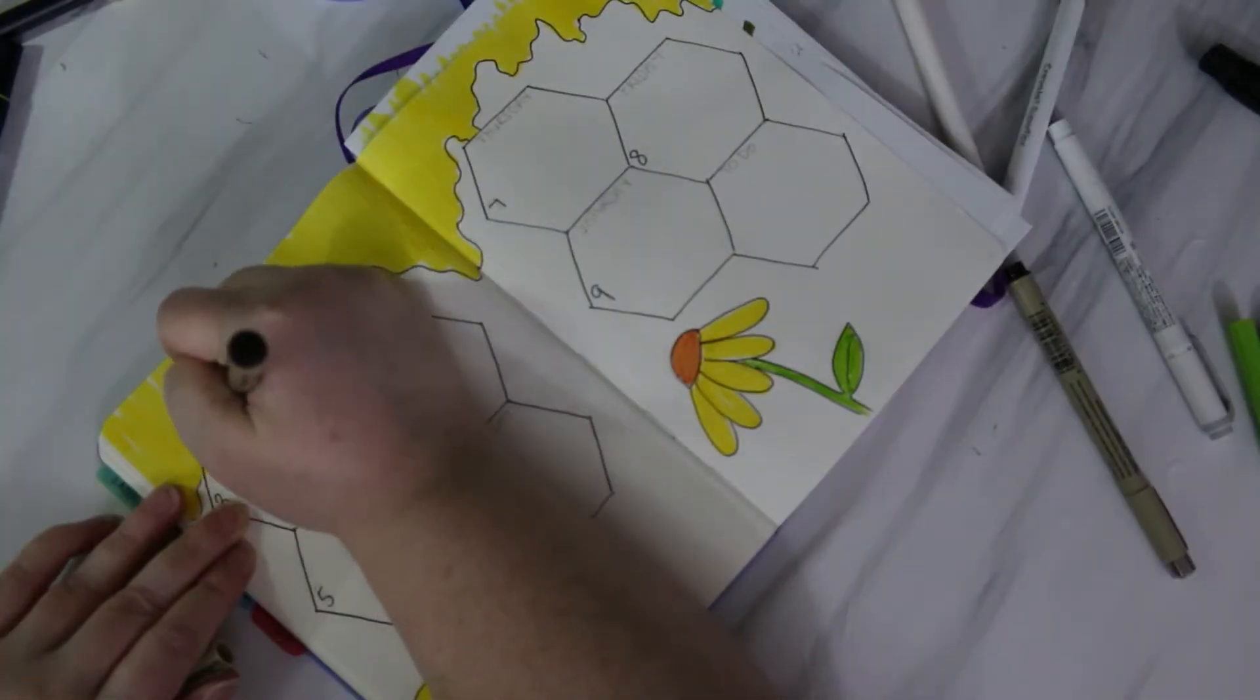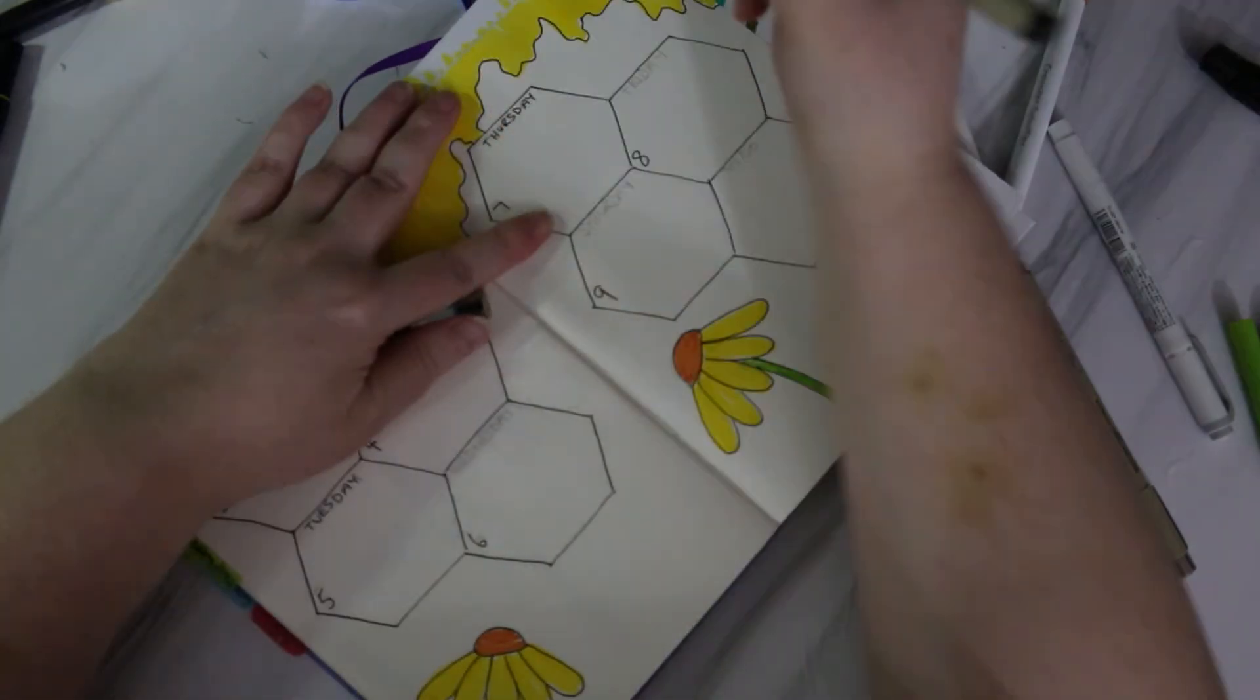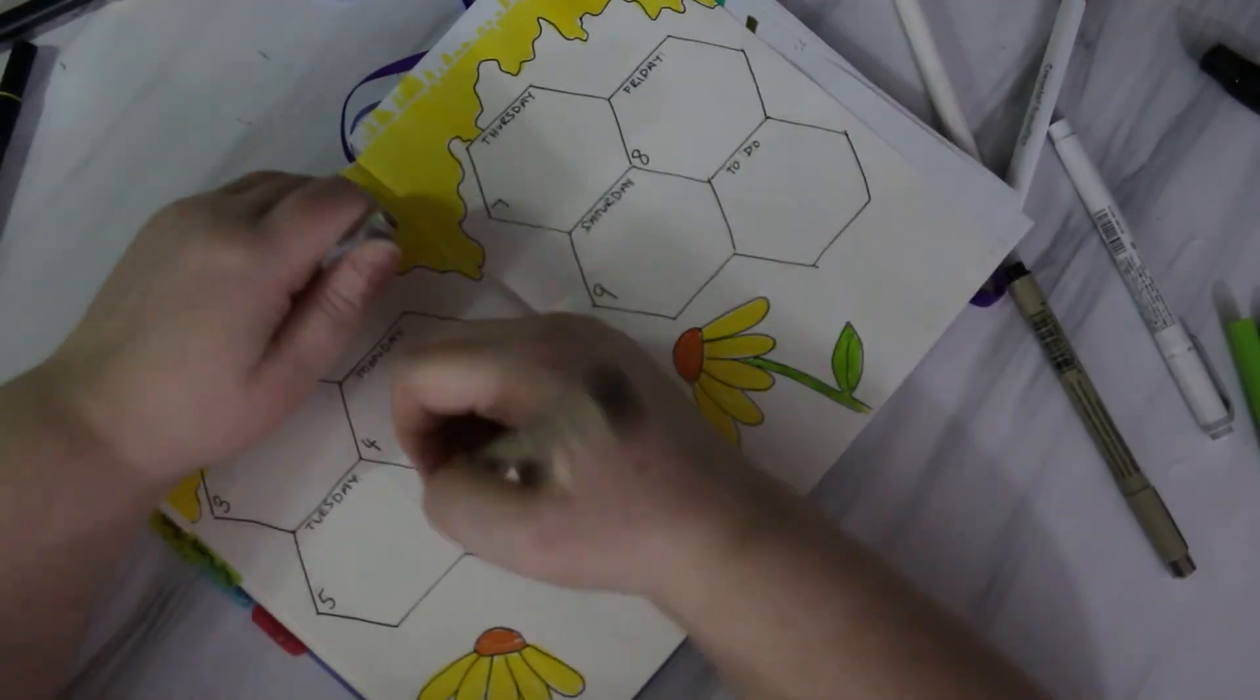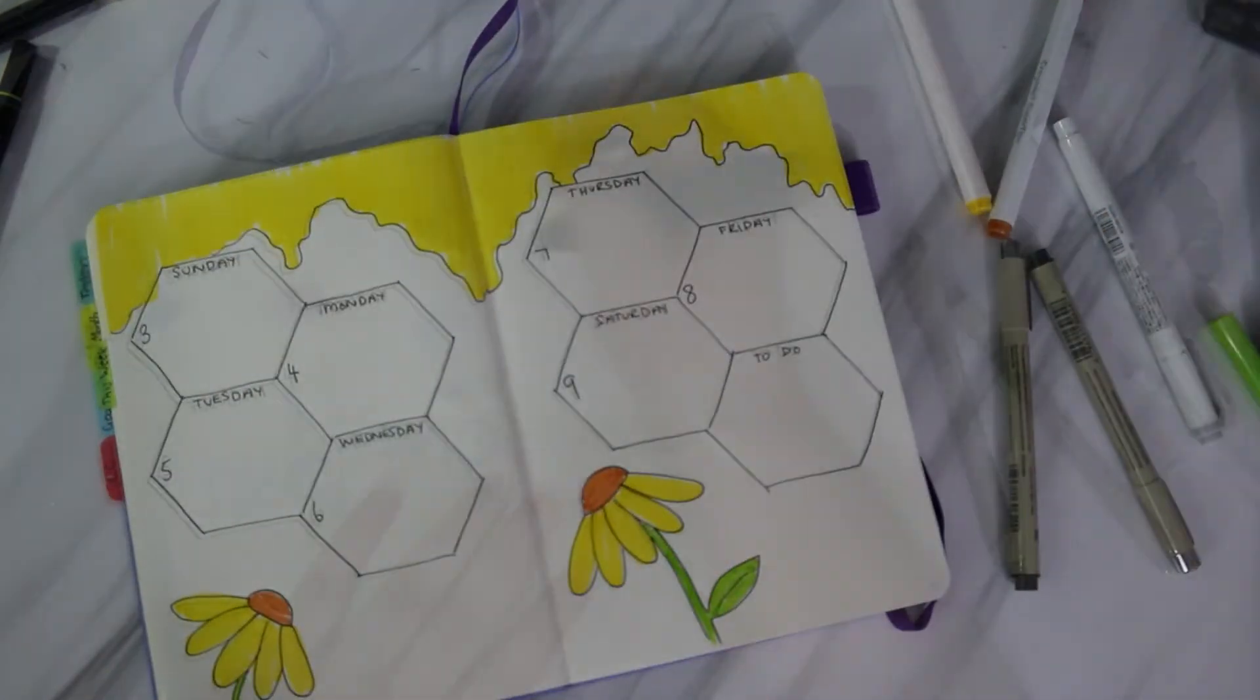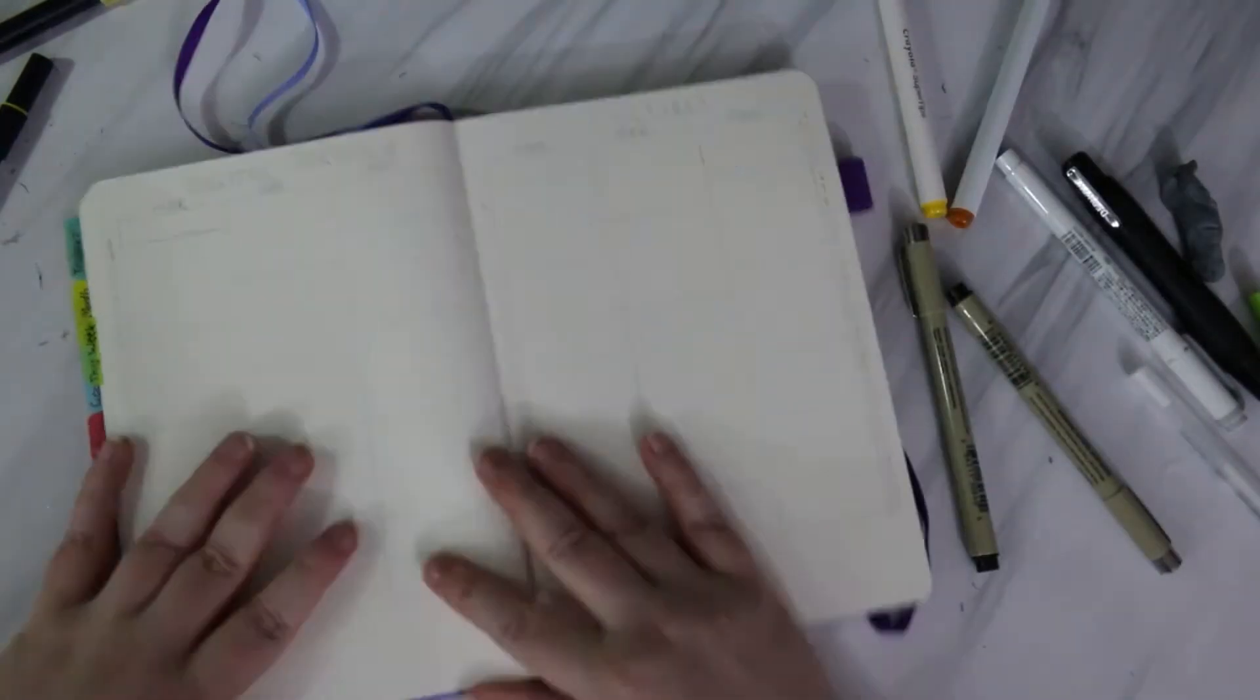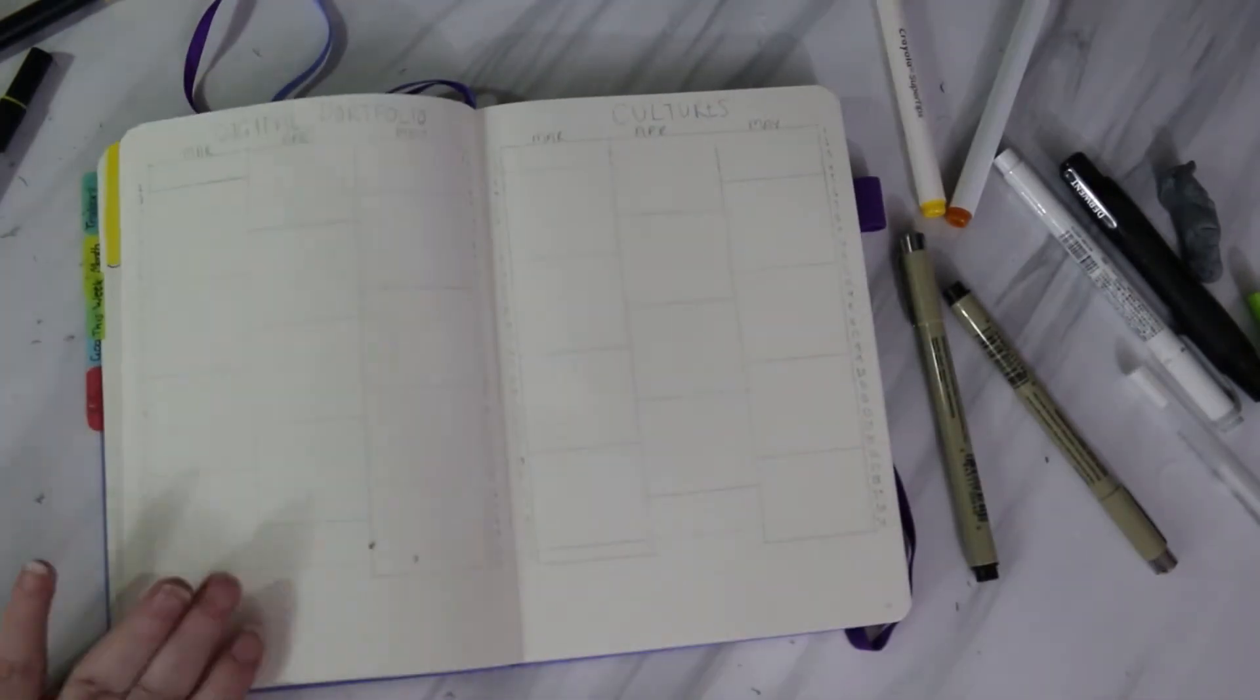I probably should have done the university calendex before March, but I didn't think about it until after I journaled out March, so I'm just putting it sort of right at the end of where my March spreads will be. As you can see, I've already penciled them out, but I won't be doing them until halfway through next week.